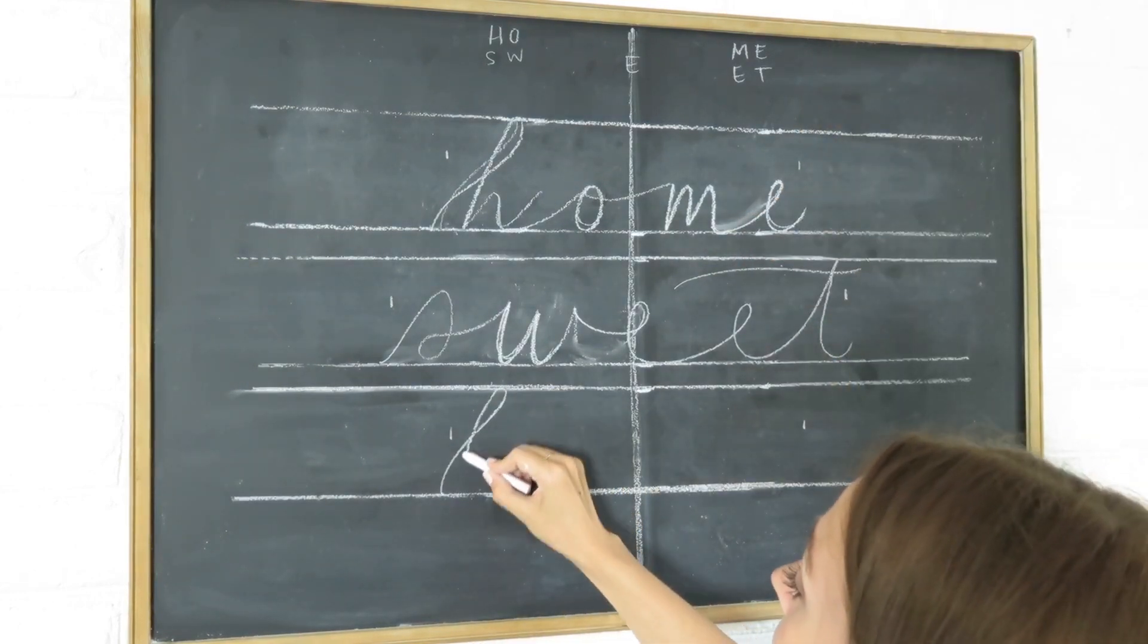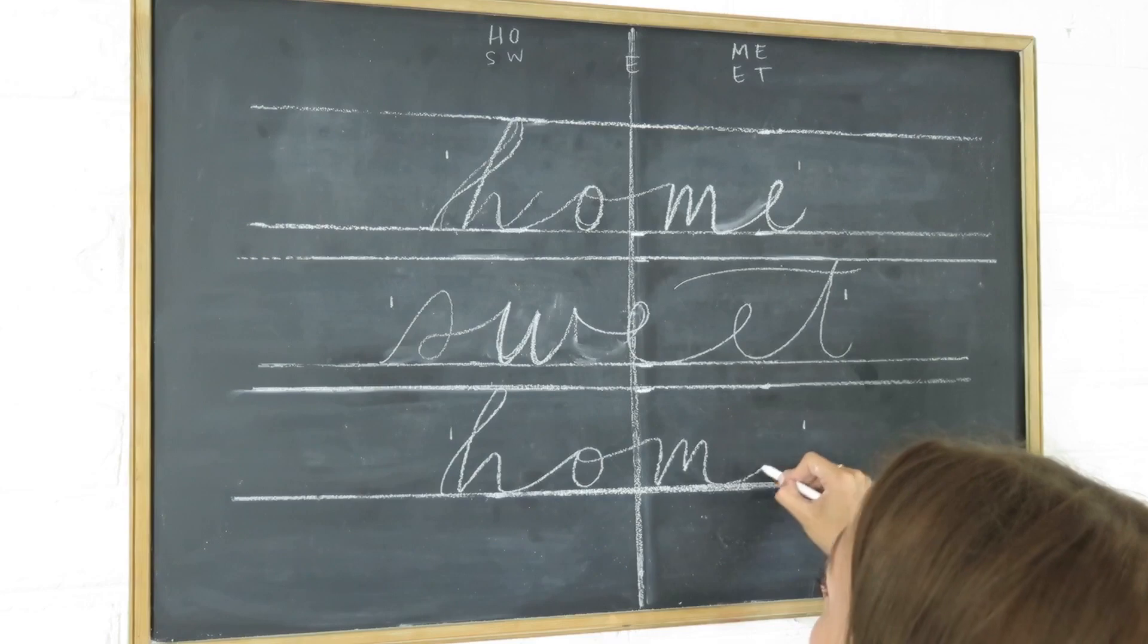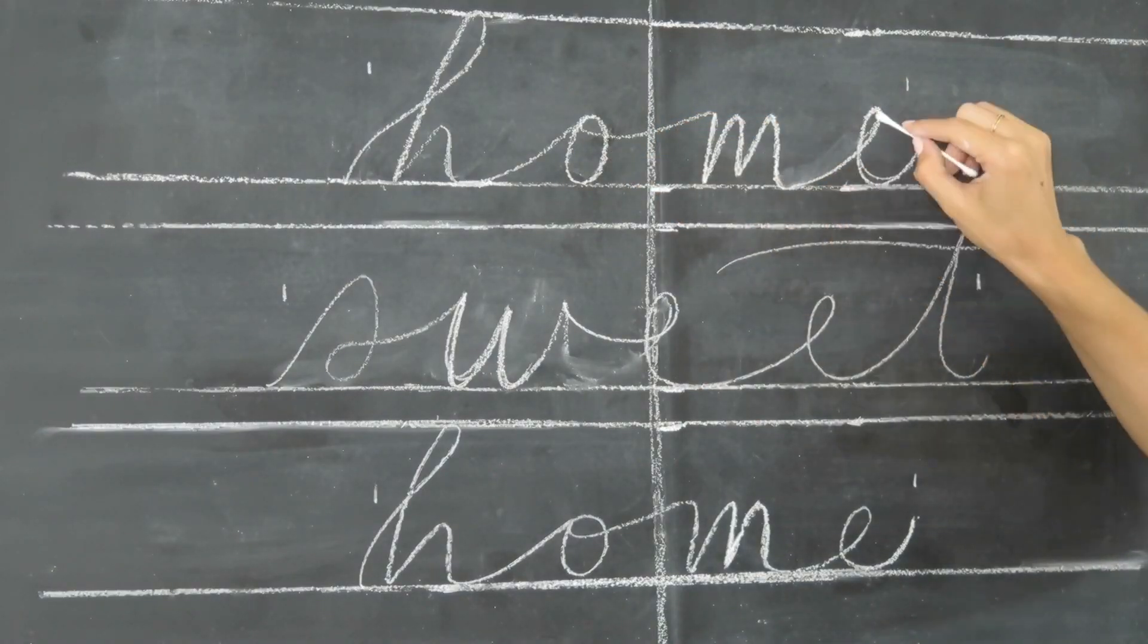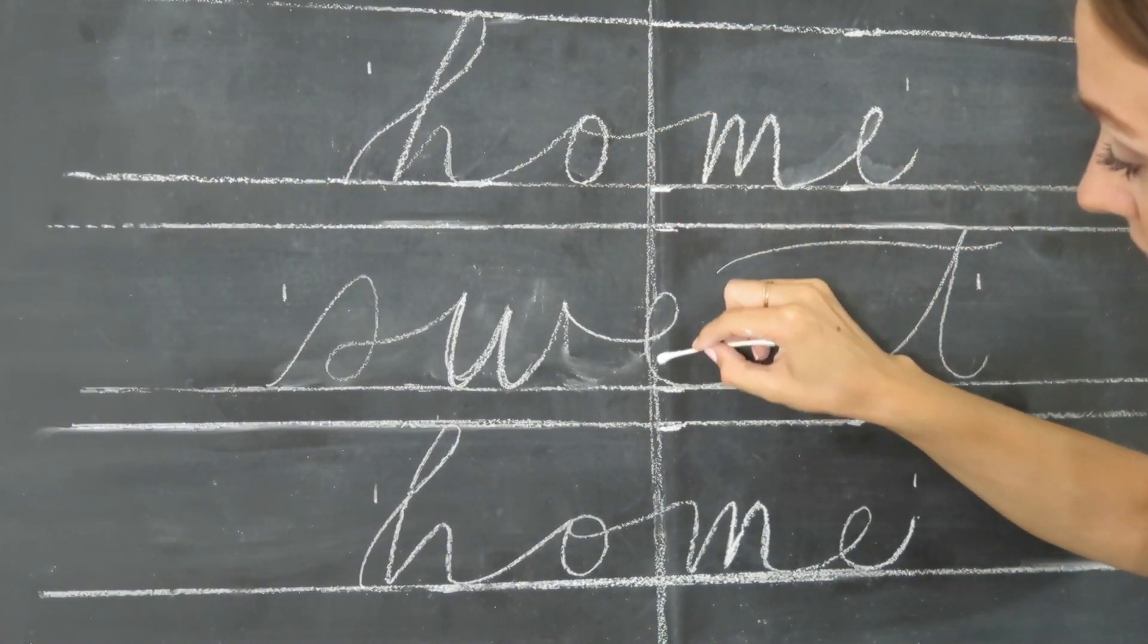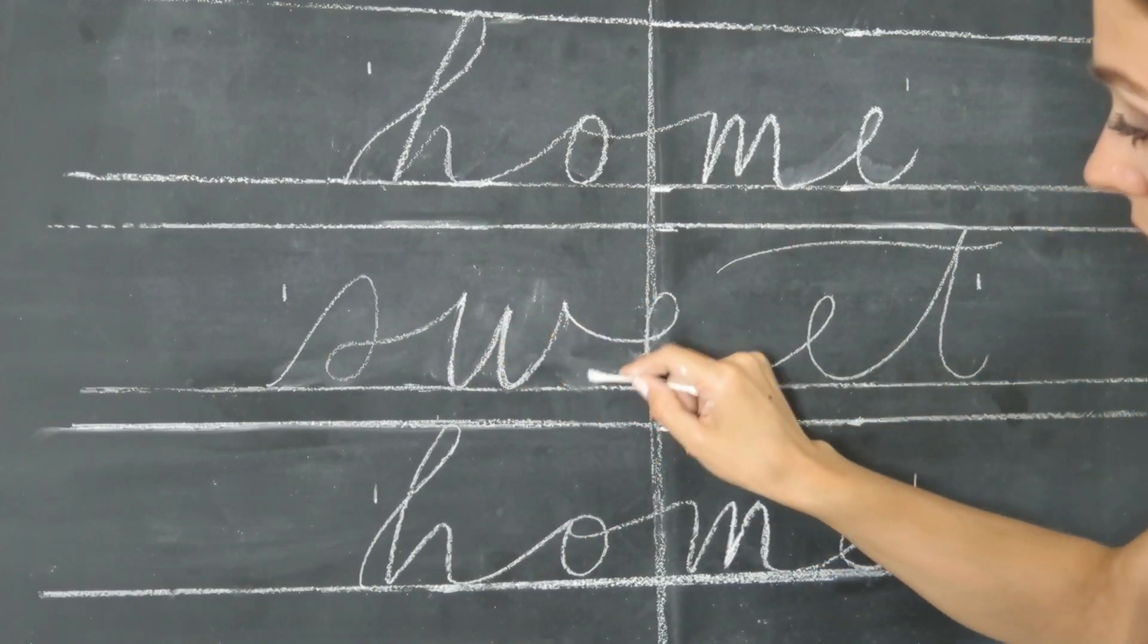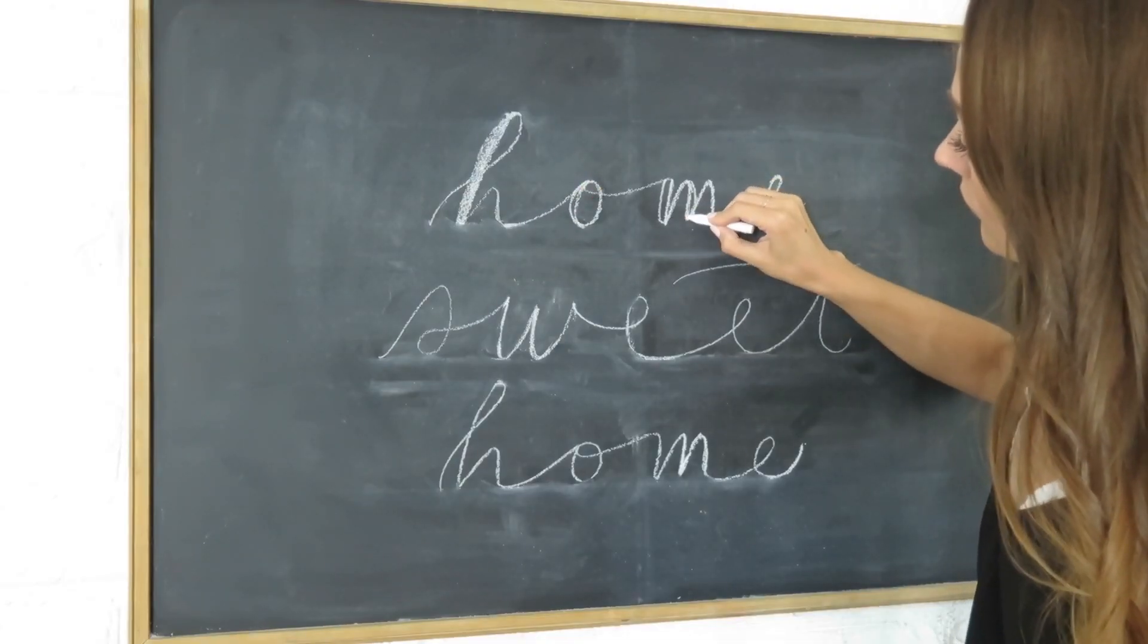So as you can see, I started by writing each word in cursive with a considerable amount of space between the letters because I wanted it to feel light and airy. Follow your guideline as best as you can, making sure to line up the bottoms and tops of the letters properly.